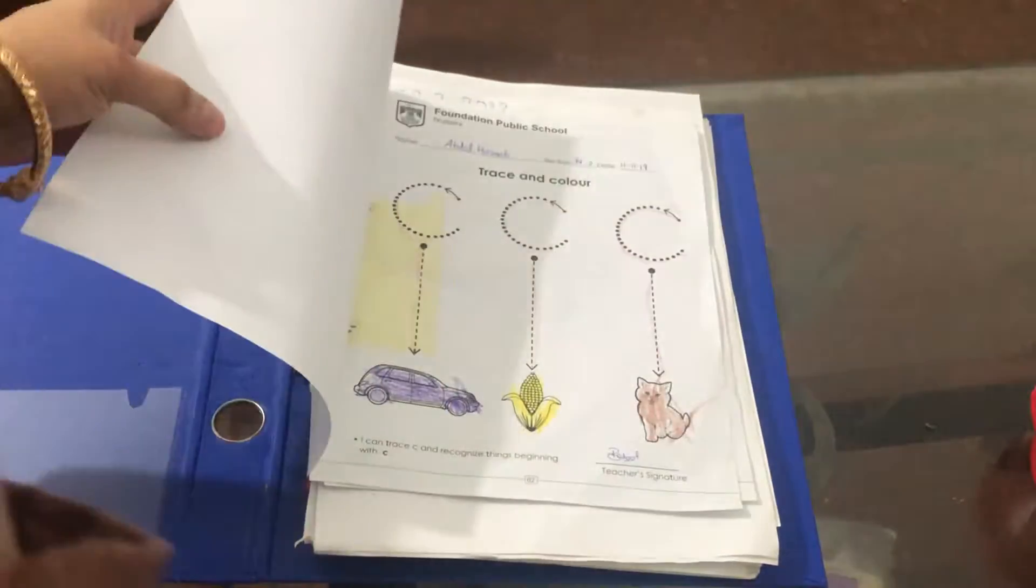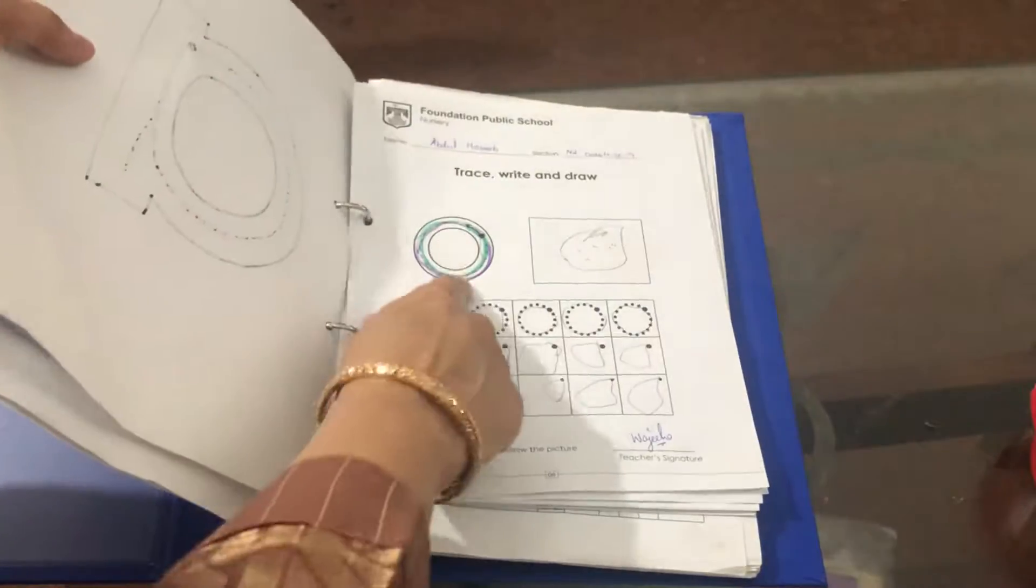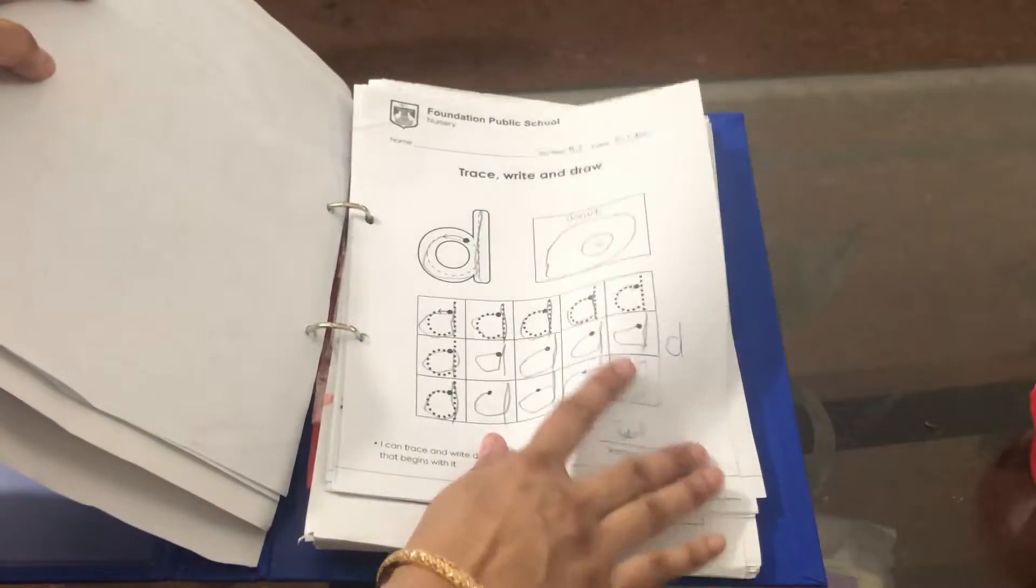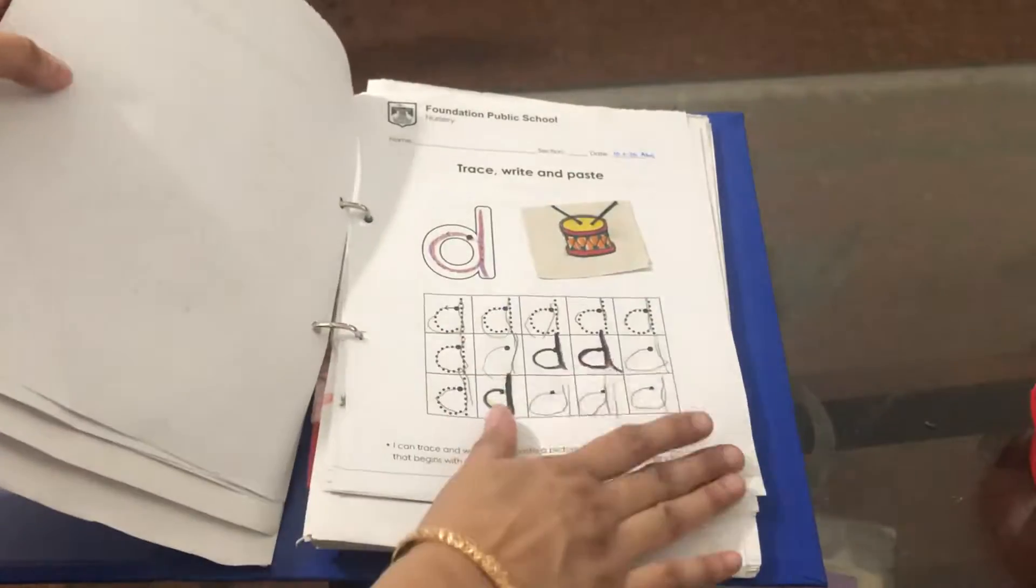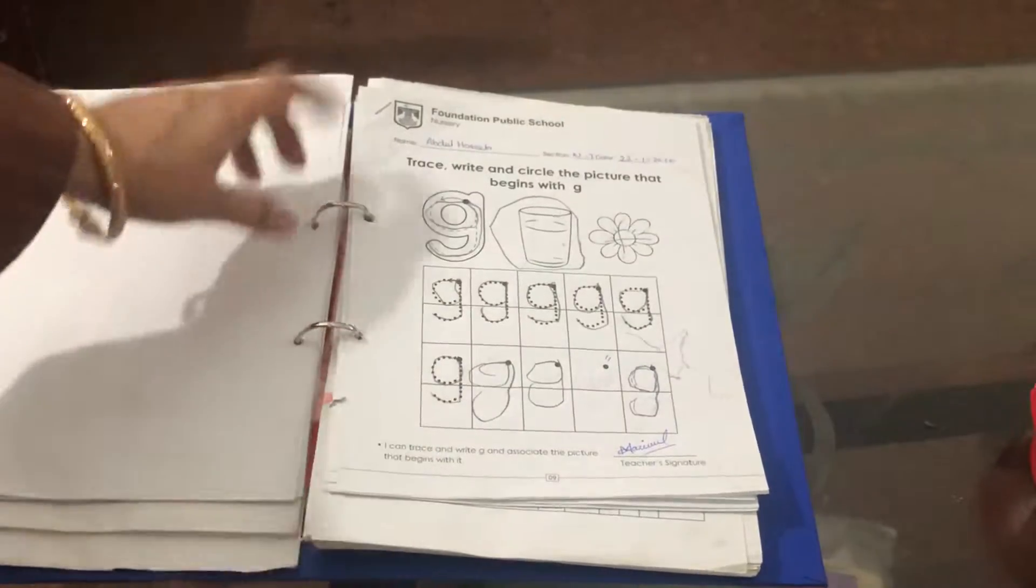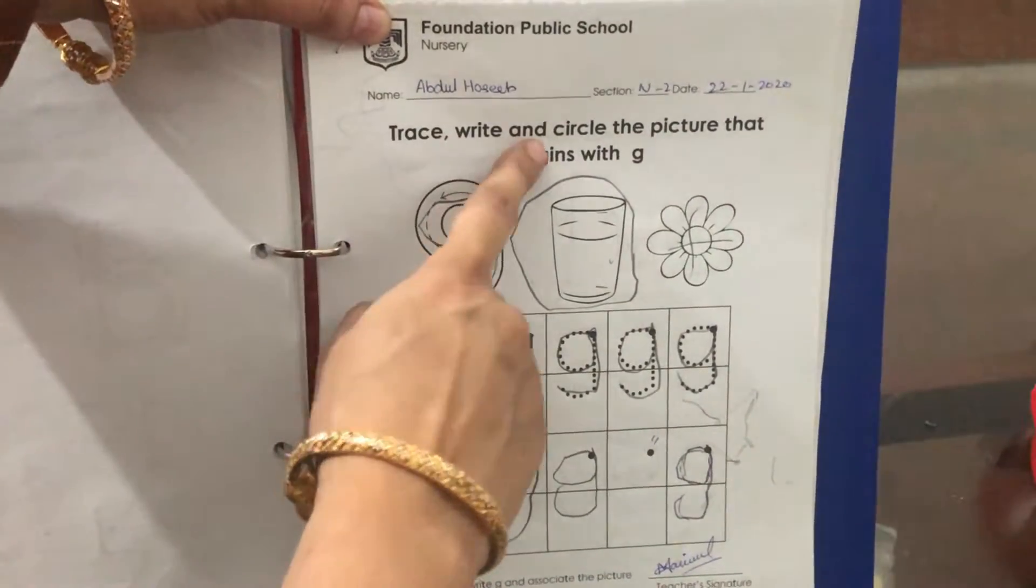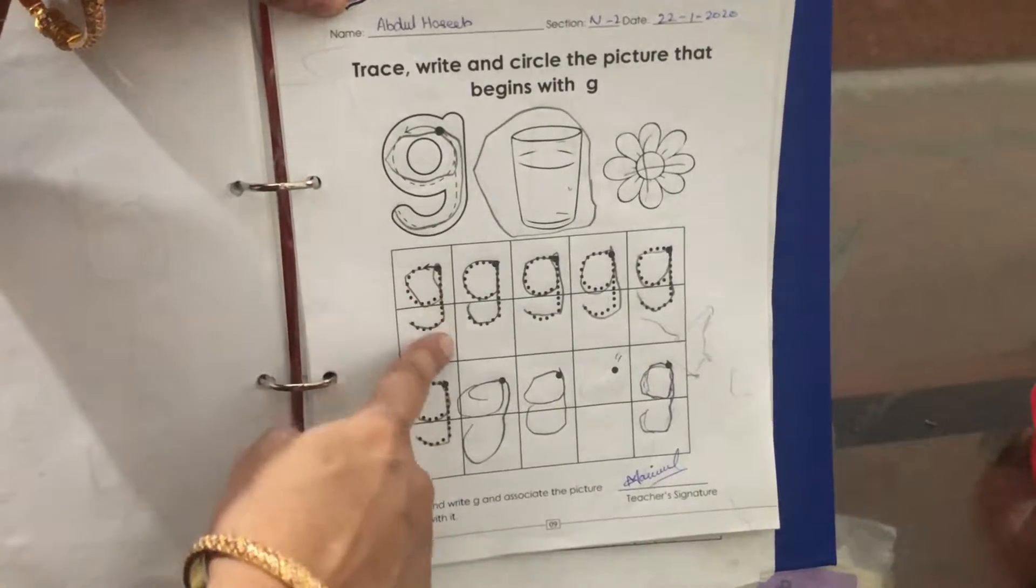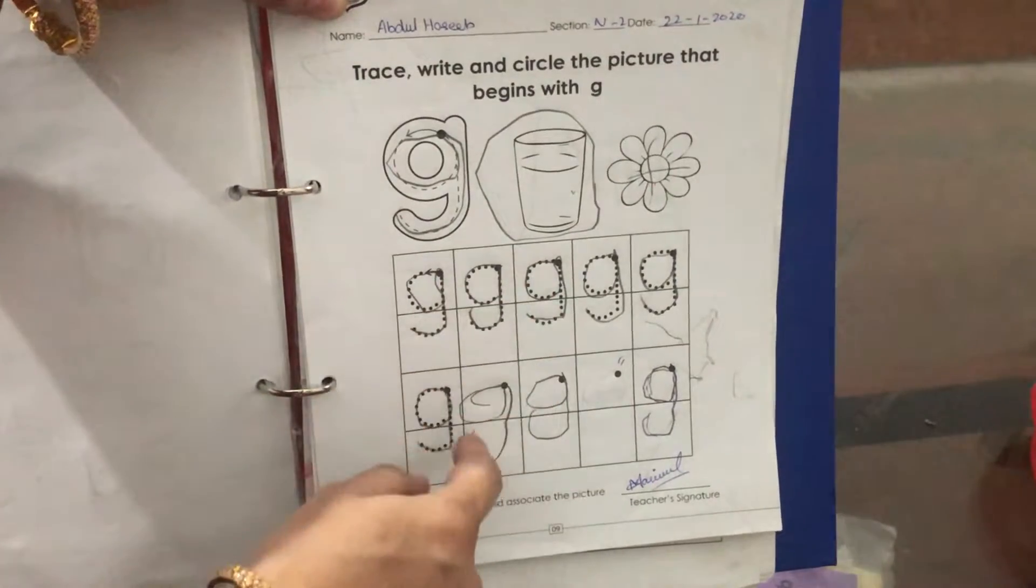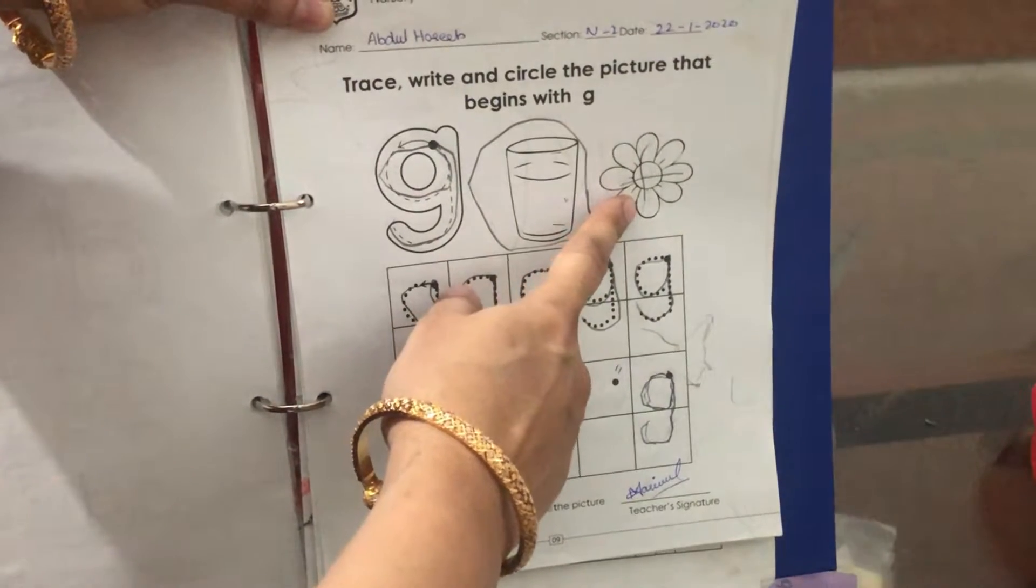Assalamu alaikum, welcome to my channel Learn Me. By now we have learned the tracing of sounds ka, a, and da. Now we will do practice of a new sound, that is ga. Let's start tracing of the sound ga. Here we have to trace the sound ga and we have to circle the picture that begins with the sound ga.